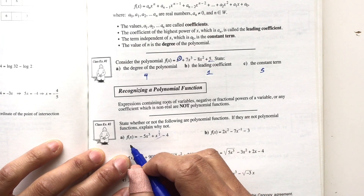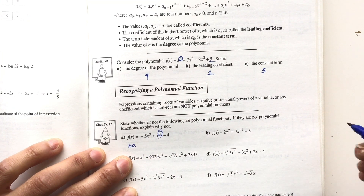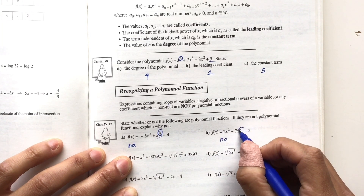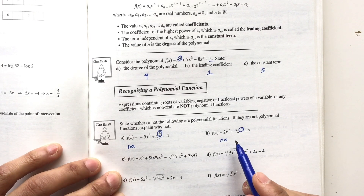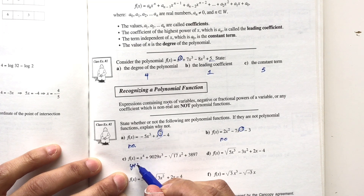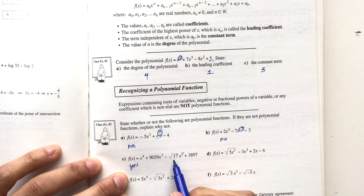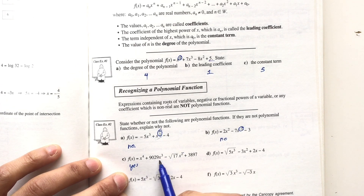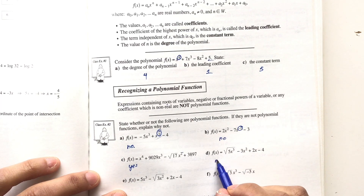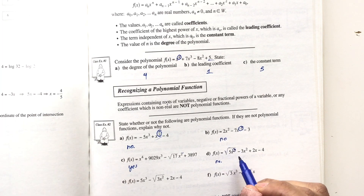For example, this first expression is not a polynomial function because it has a fractional power. This one is also not a polynomial function because it has a negative exponent. This one here is a polynomial function even though it has a square root — the square root is not attached to an exponent, so it qualifies. But f(x) = 5x³ with a square root that includes the exponent — that one is not a polynomial function.